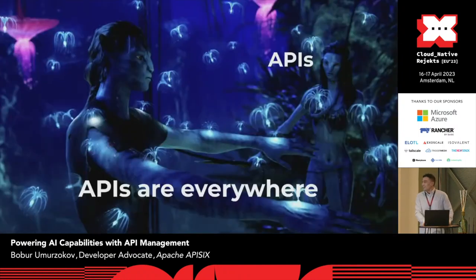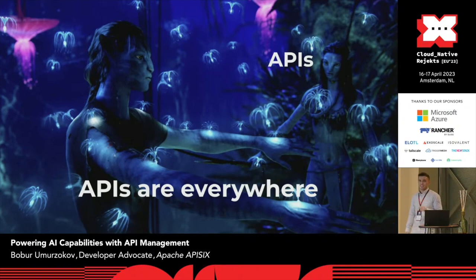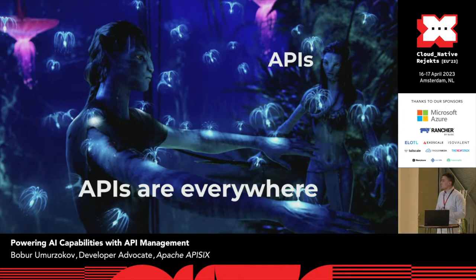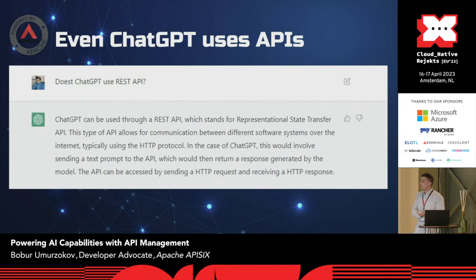Let's start with APIs — just three letters, but we're all familiar with this term now. Raise your hand if you don't know what an API is — everybody knows, right? It's just an application programming interface, and everybody uses APIs because even ChatGPT uses an API to retrieve functionality through REST.